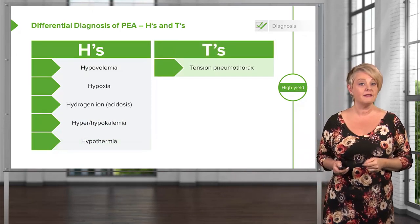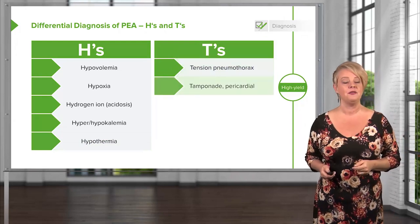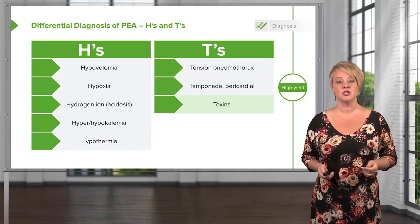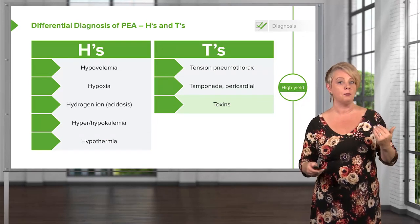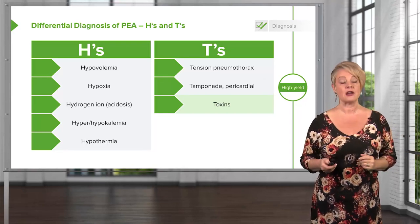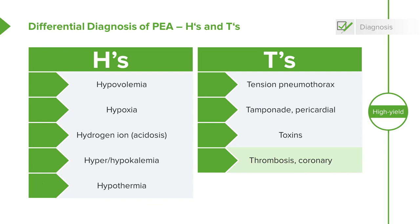Tension pneumothorax and tamponade are causes of empty heart PEA, as we discussed. A number of toxins can potentially produce PEA by uncoupling energy metabolism from normal cardiac contraction. Massive MIs can cause such profound reduction in cardiac squeeze that you can't clinically detect a pulse. And massive pulmonary embolisms can cause such severe obstruction of normal pulmonary blood flow that they produce empty heart PEA the same way any other obstructive cause would.